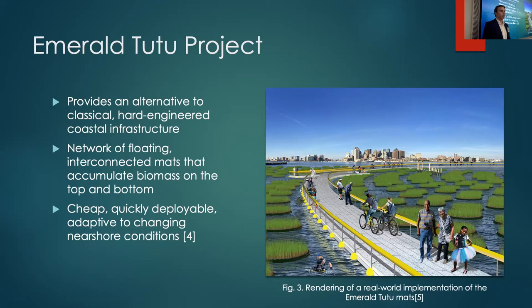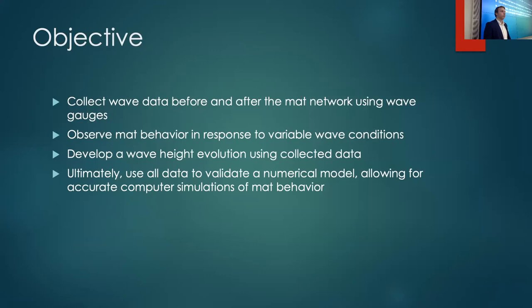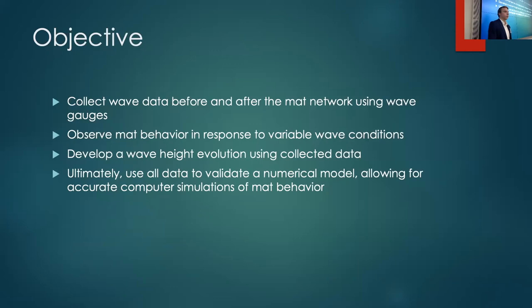The Emerald 22 team, in collaboration with the O.H. Hinsdale Wave Research Laboratory, primarily aimed to observe the parameter-based reaction of the ML22 mat network — parameters including wave height, wave angle, wave period, irregular vs. regular waves, and configuration. I specifically looked at wave height reduction caused by the mat network using 20 wave gauges — 10 before and 10 after the mat system. All of this data will be used to validate a numerical model.